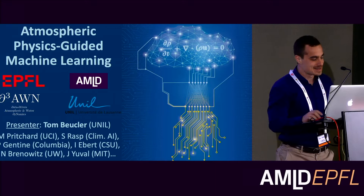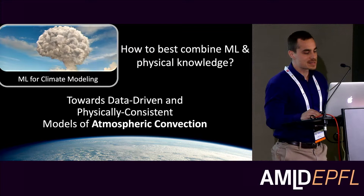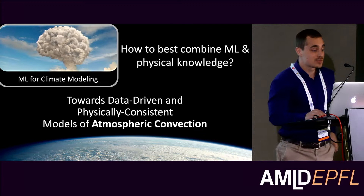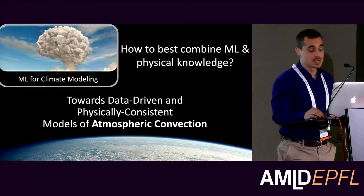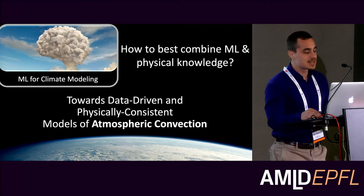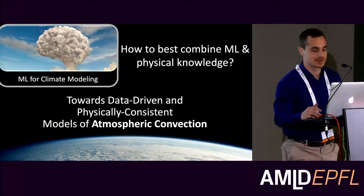Today I'm going to present some of my postdoctoral work asking this very general question that a lot of you may be interested in: how to get the best of both worlds, how to best combine machine learning and physical knowledge. And because I'm an atmospheric physicist, I'll do it in the particular case of developing data-driven yet physically consistent models of atmospheric convection for climate modeling.